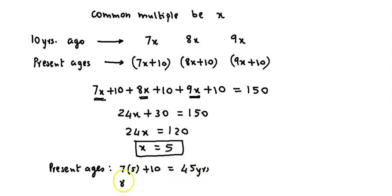Second person's age is 8x plus 10, 40 plus 10, that is 50 years.